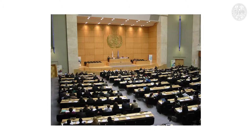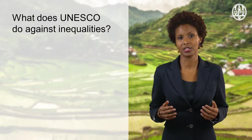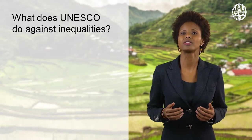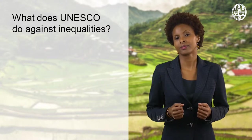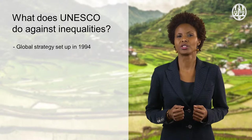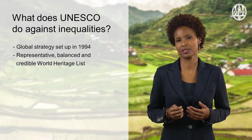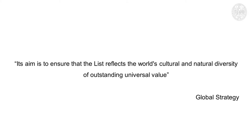We will look at Indigenous heritage management systems later in another video, but on the issue of policies, our UNESCO expert Kusje Spitz has this sobering answer: that UNESCO is as good as its member states want it to be. It simply cannot put up sanctions or physically intervene locally. So if nation states do not recognize diversity and include this in their inventories and nominations, UNESCO cannot do much. In terms of Indigenous views and heritage approaches, UNESCO set up the Global Strategy, launched in 1994. The Global Strategy is for a representative, balanced and credible World Heritage List, and its aim is to ensure that the list reflects the world's cultural and natural diversity of outstanding universal value.